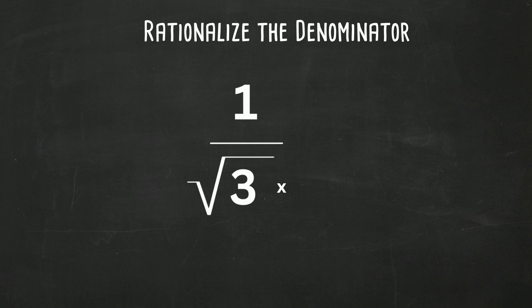If you take the square root of 3 times the square root of 3, that gives you the square root of 9, and 9 is the perfect square of 3.